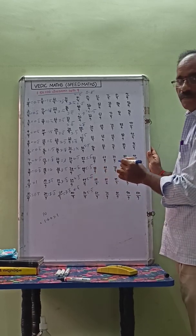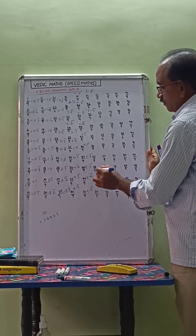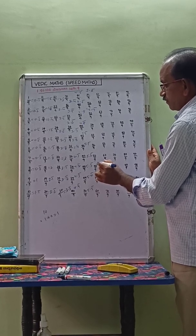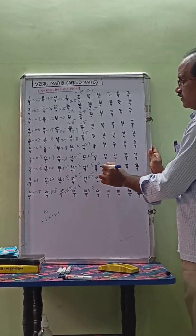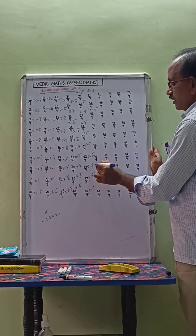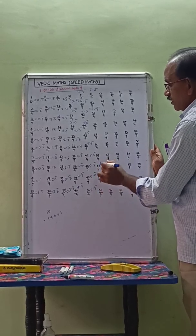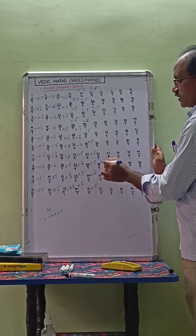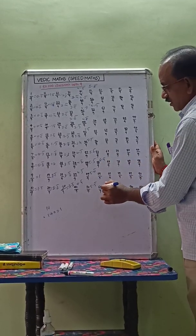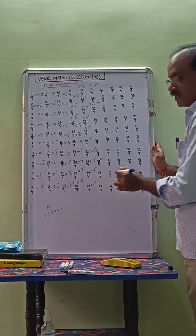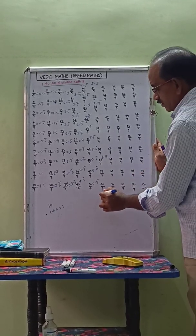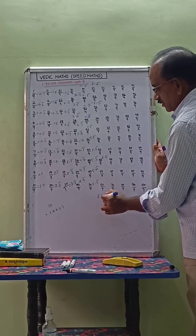58 by 9: sum of the digits equals 13, digital sum of the digits — 1 plus 3 equals 4 bar. So 58 by 9 equals 6.4 bar. 60 by 9 equals 6.6 bar.